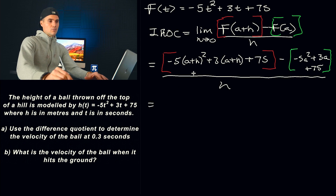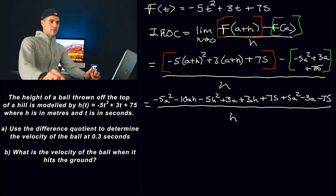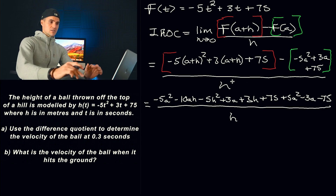Now, what we have to do is expand all of this — there's going to be a bunch of terms that cancel out. When you expand everything in the numerator, make sure you end up with those expressions. This is a step where many students slip up with the algebra. You've got to FOIL out (A plus H) times (A plus H), then distribute the negative 5, and distribute the negative 1 into the green bracket.